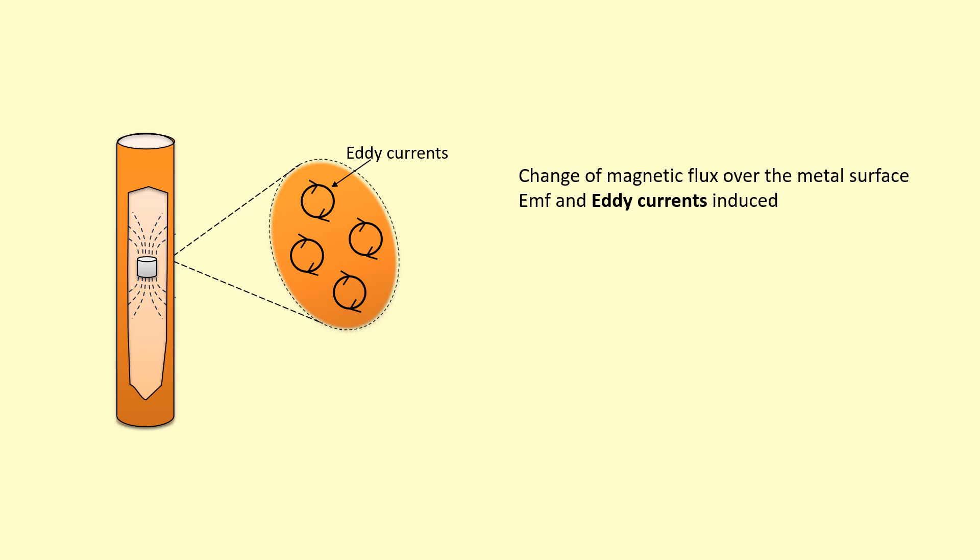Faraday's law tells us when there's a rate of change of flux along a metal surface or a conductor, there's going to be an EMF induced and that's going to produce current. In this case, we call it eddy currents. In fact, these eddy currents can add up. These tiny loops can add up to form large eddy currents if it's allowed to do so.